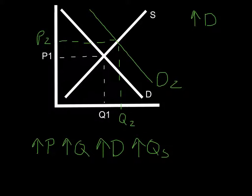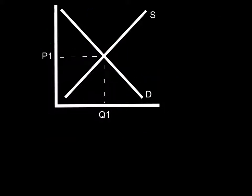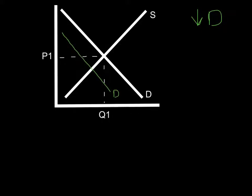Let's take a look at the second graph. We are going to do a decrease in demand. An increase in demand caused the demand curve to shift to the right; a decrease in demand will cause the demand curve to shift to the left. So that will be D2 — a decrease in demand.